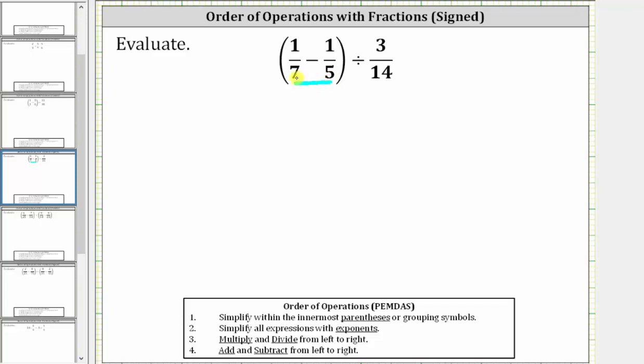And since the only common factor between 7 and 5 is 1, the least common multiple or least common denominator is 7 times 5, which is 35.